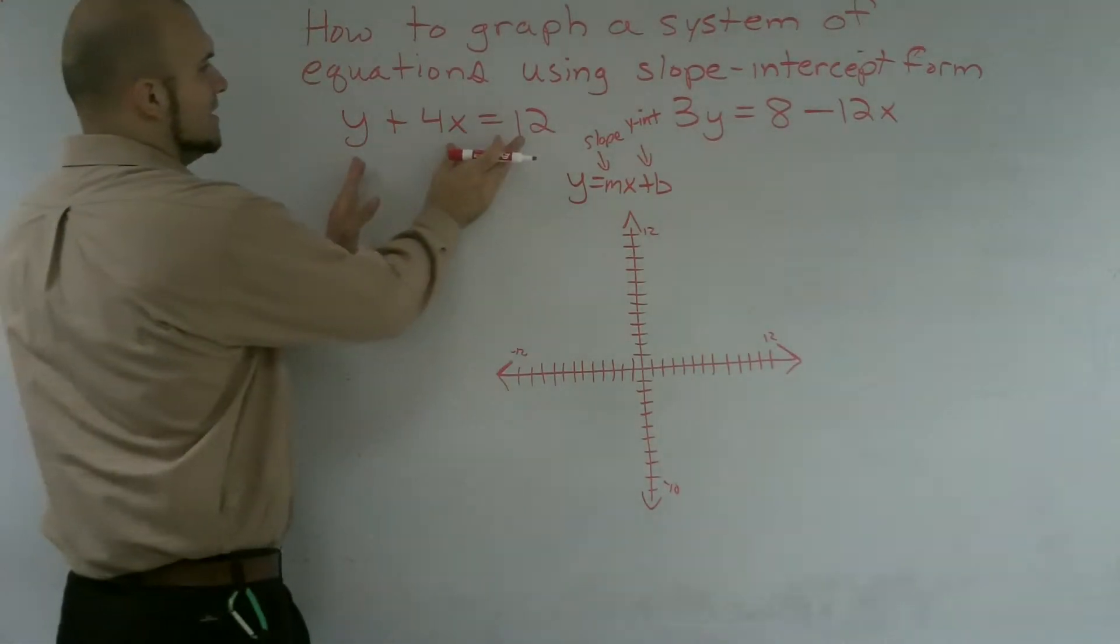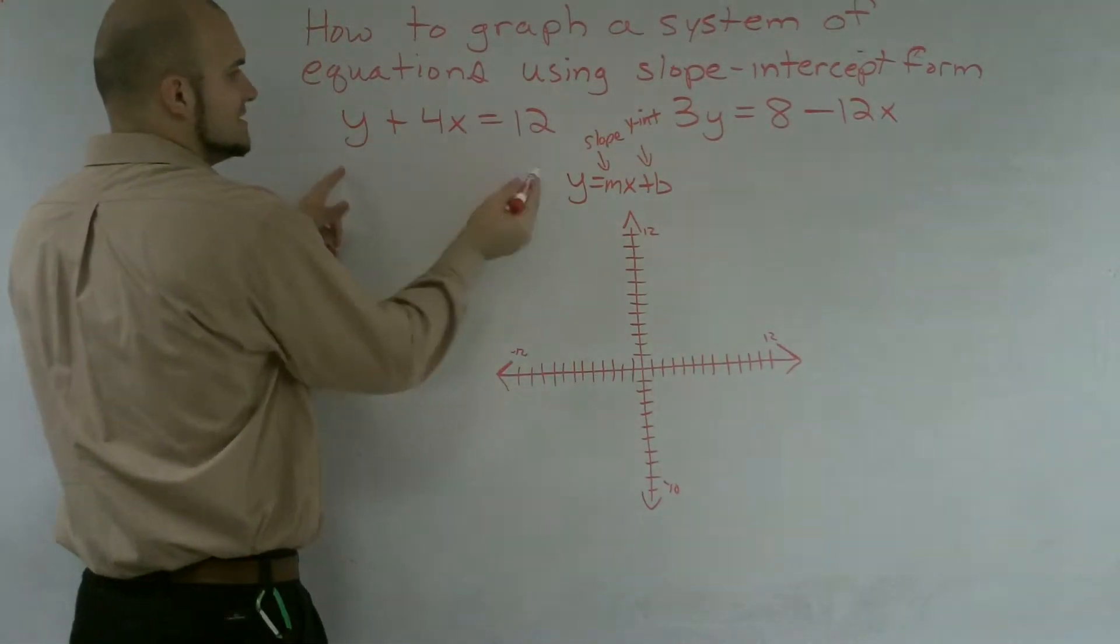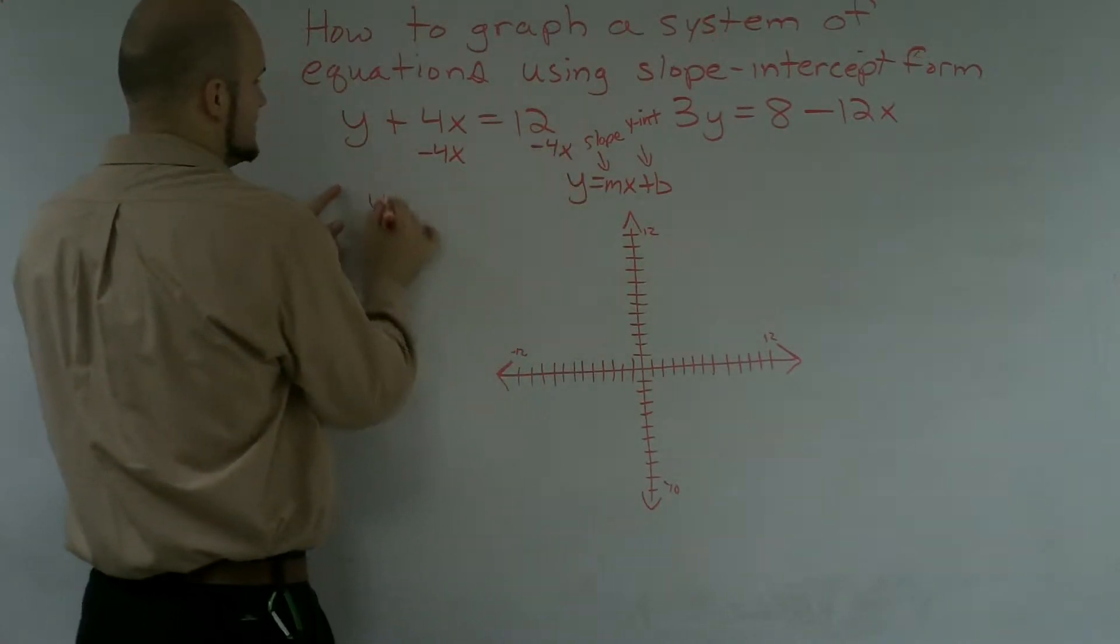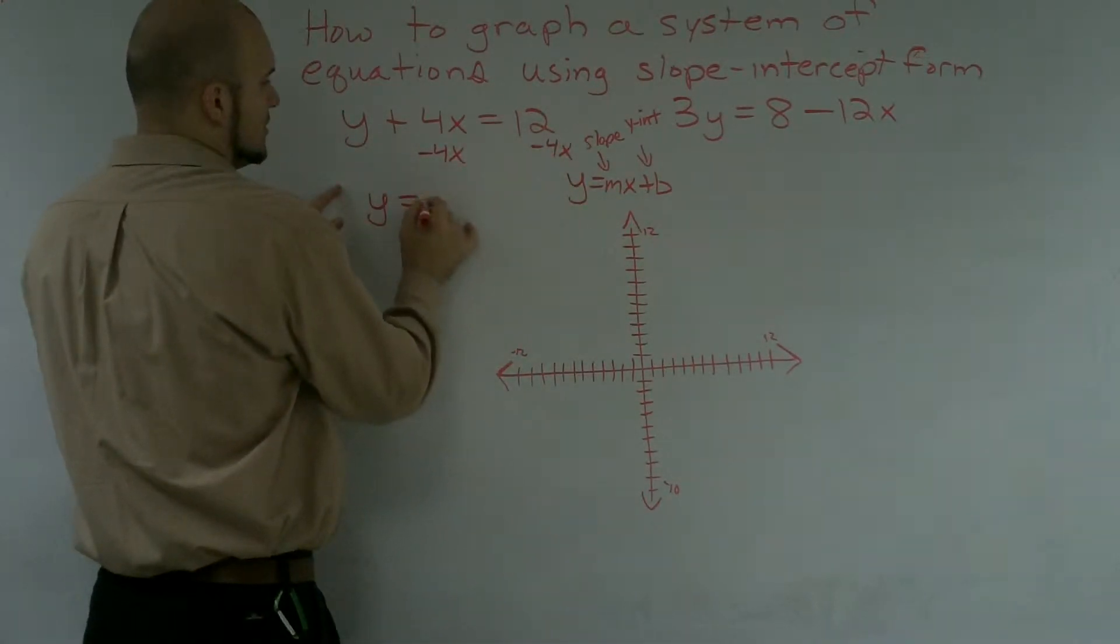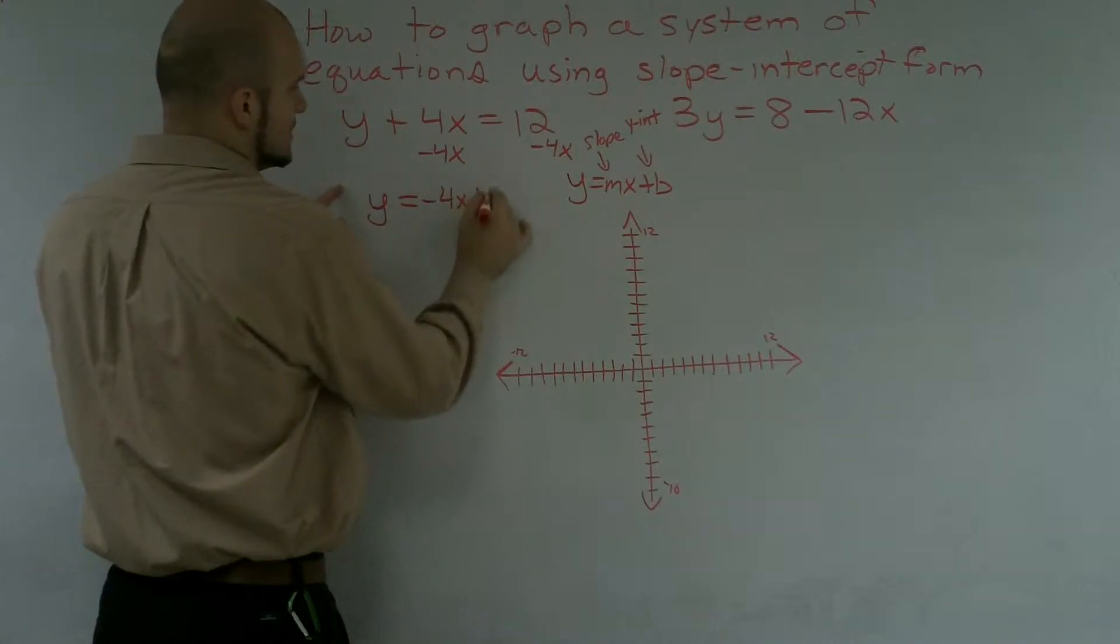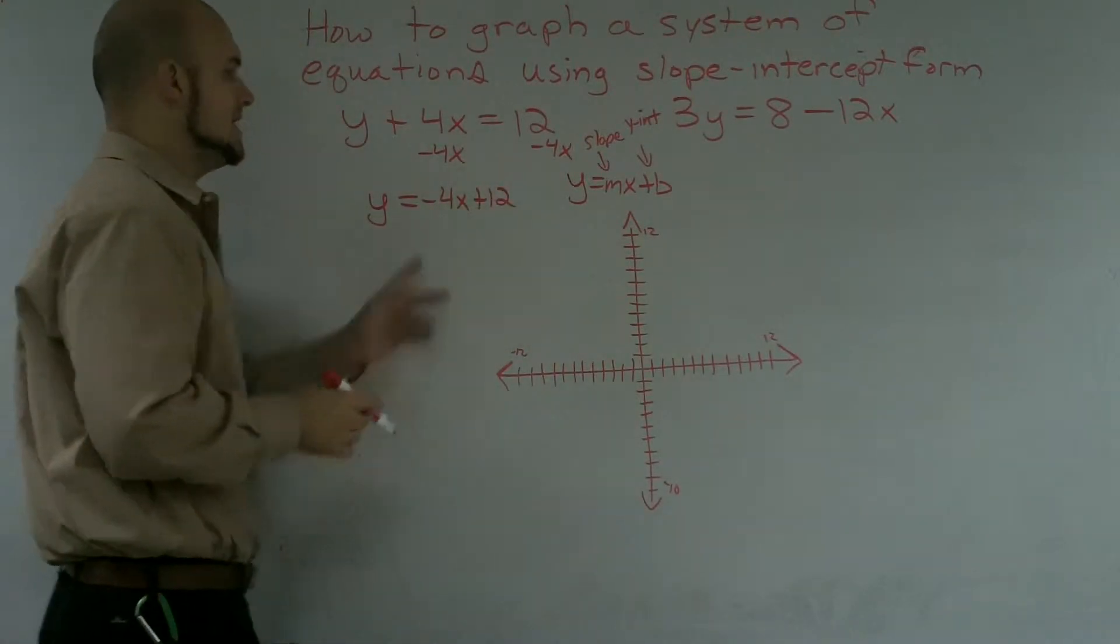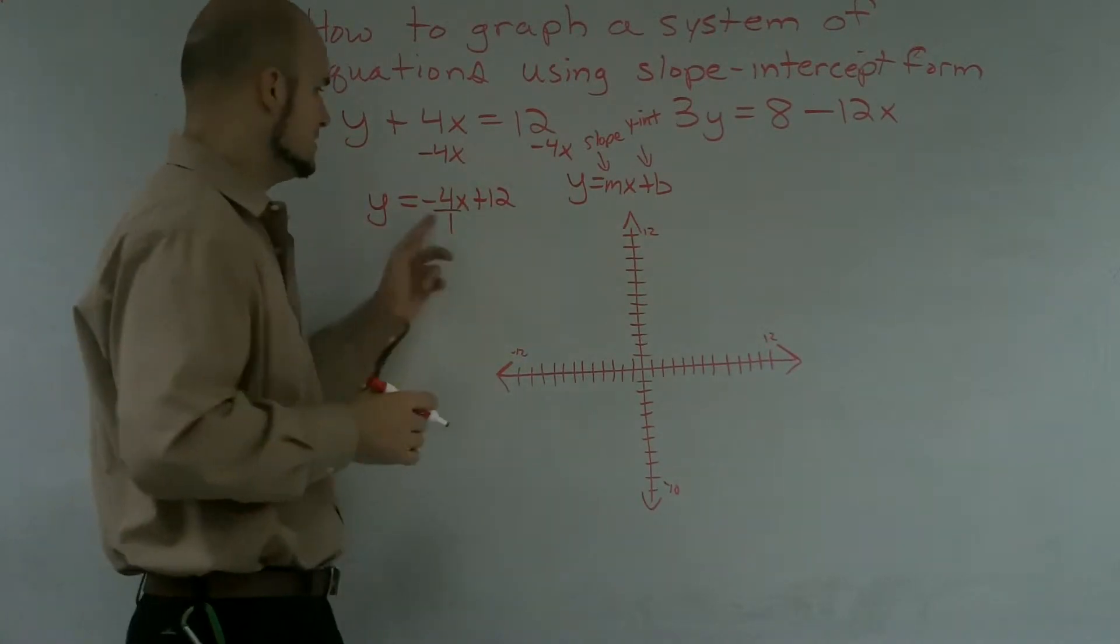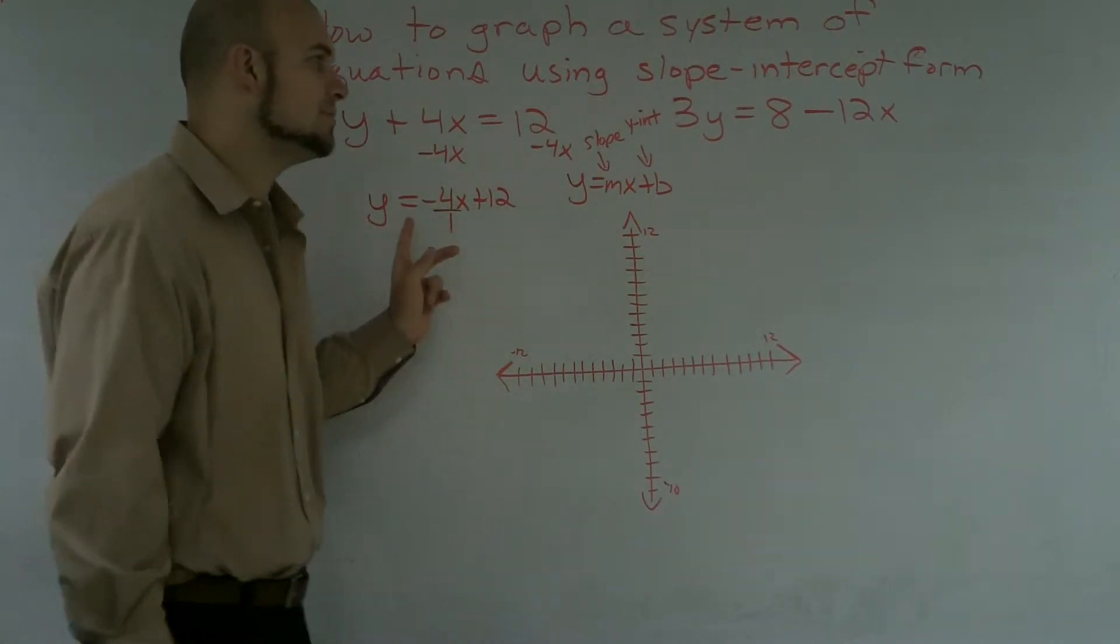So over here, what I notice I'm going to have to do is to get this to y equals, I'm going to have to subtract the 4x on both sides. Therefore, now I obtain y is equal to negative 4x plus 12. And I notice when I have a whole number as my slope, I can always convert that as my rise over run. I just put it over 1. So that's a lot easier for me to be able to plot this.